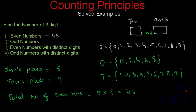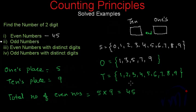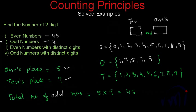Similarly, if we talk about two-digit odd numbers, the choices for the one's place will have a different set. For odd numbers at the one's place, we can have 1, 3, 5, 7, and 9. For the tenth place, again we have choices from 1 to 9. So again we have five choices for the one's place and nine choices for the tenth place. The total number of odd numbers will again be 45.